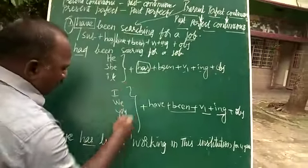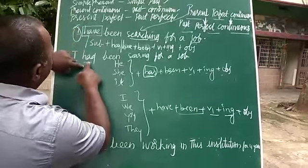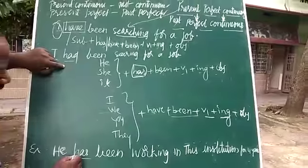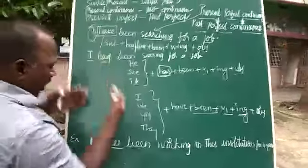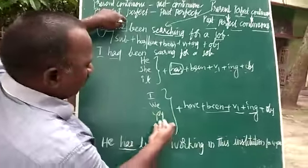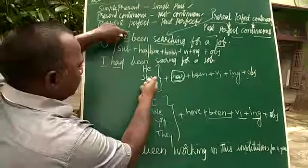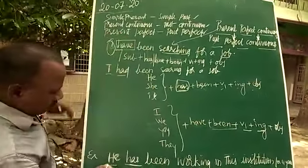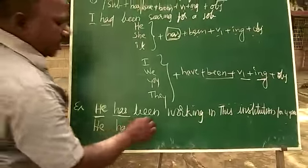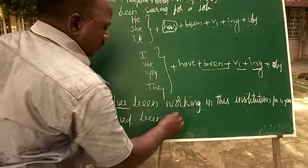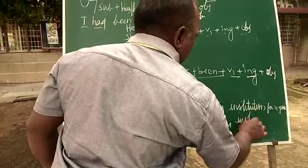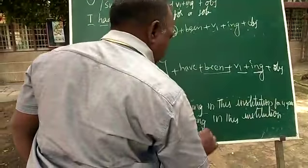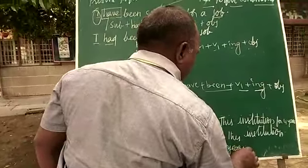With plural pronouns you take 'have', and with third person singular — he — 'has' is there, but you have to take 'had'. As it is, we write: been working in this institution for four years. So 'He has been working in this institution for four years' becomes 'He had been working in this institution for four years.'